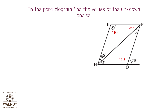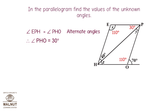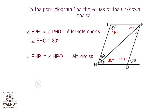Take a look at the parallelogram and find the values of the unknown angles. Angle EPH equals angle PO as alternate angles, therefore angle PO = 30°. Angle EHP equals angle HPO as alternate angles, therefore angle HPO = 40°.